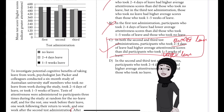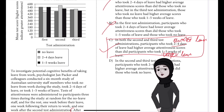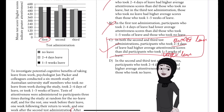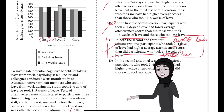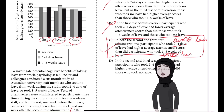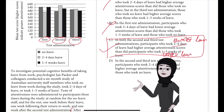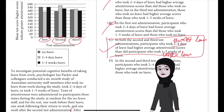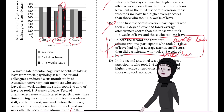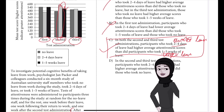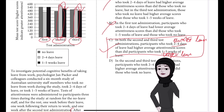The participants who took leave were tested one week before their leave — that is the first test, before they had even gone on leave. The second test is one week after return to work, and the third test is two weeks after the return. Looking at the graph, in both the second and third test administrations, you can observe that the two to four day leave — the shorter leave — shows greater attentiveness scores than those who took the longer leave of one to five weeks.